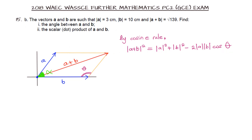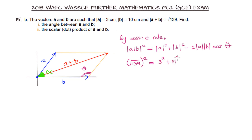We are noting that theta is not the angle between vectors a and b — it is as shown in the diagram. Substituting all values, we have root 139 raised to the power 2, equal to 3 squared, plus 10 squared, minus 2 times 3 times 10 times cos theta.